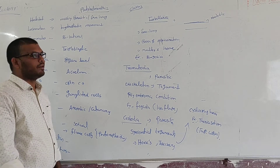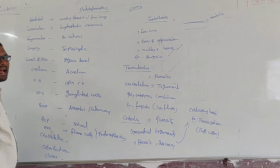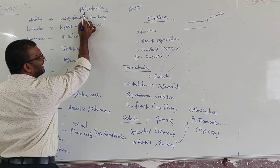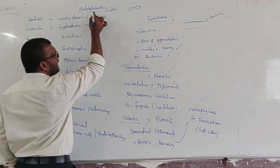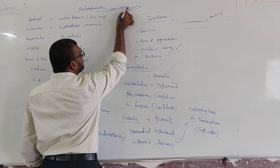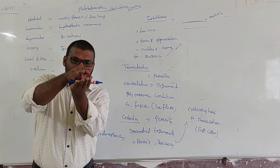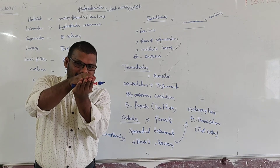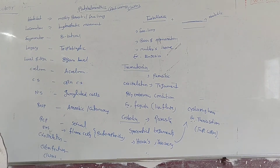Today we can discuss a very important phylum called Platyhelminthes. 'Platy' indicates flat, and 'helminthes' indicates worms. So flat worms. This is the dorsal side and this is the ventral side. They are compressed in a dorsal-ventral manner, which is why Platyhelminthes indicates the flat worms.